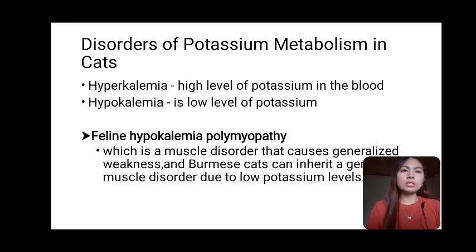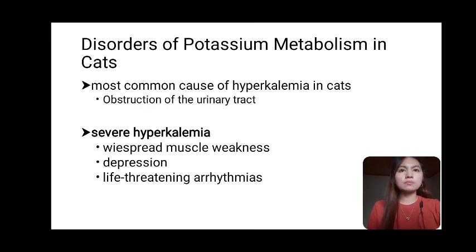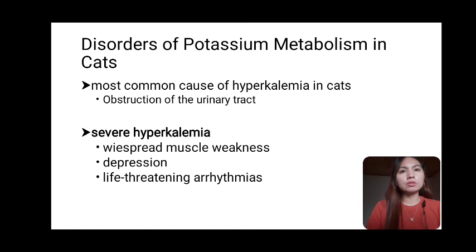Disorders of potassium metabolism in cats include hyperkalemia and hypokalemia. Hyperkalemia is a high level of potassium in the blood; the most common cause in cats is obstruction of the urinary tract. Severe hyperkalemia causes widespread muscle weakness, depression, and life-threatening arrhythmias. Hypokalemia is a low level of potassium. Feline hypokalemia polymyopathy is a muscle disorder causing generalized weakness; Burmese cats can inherit a genetic muscle disorder due to low potassium levels.